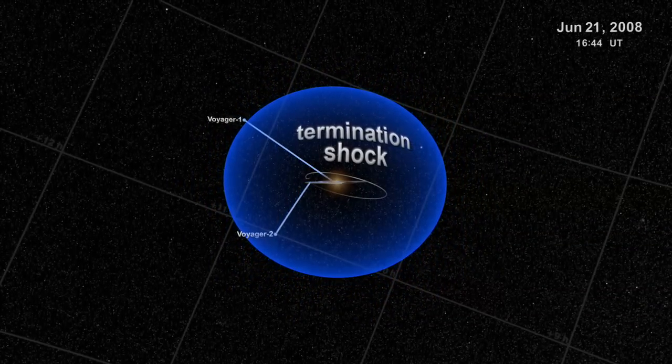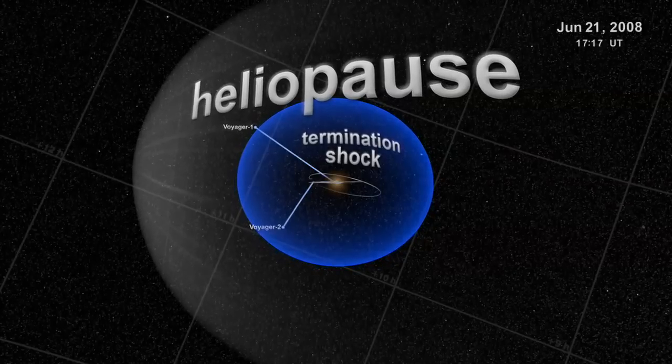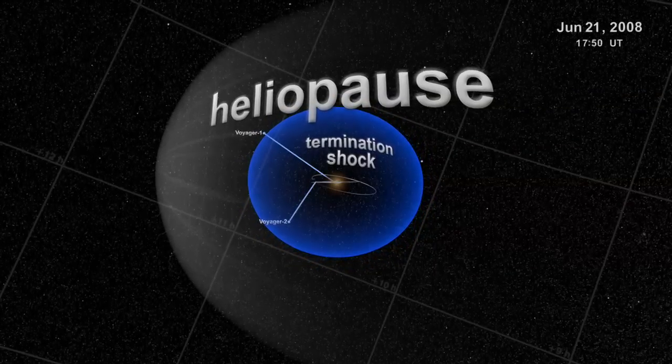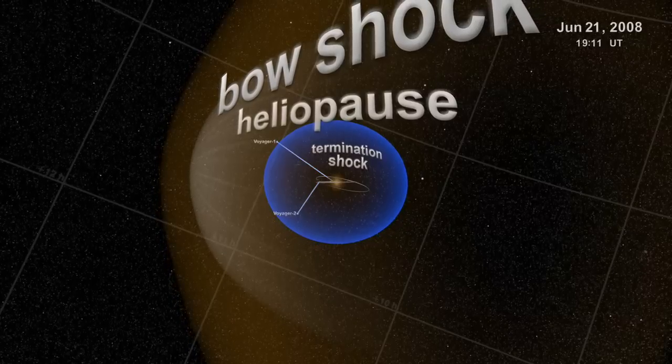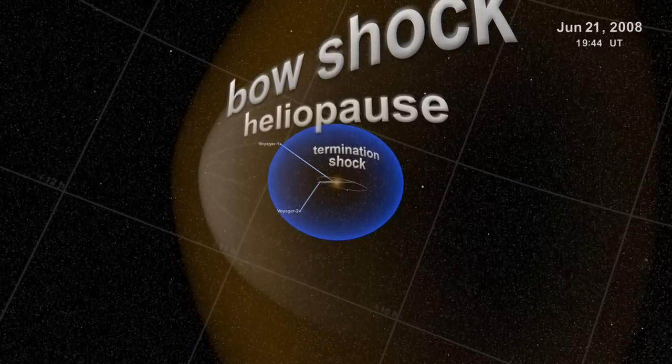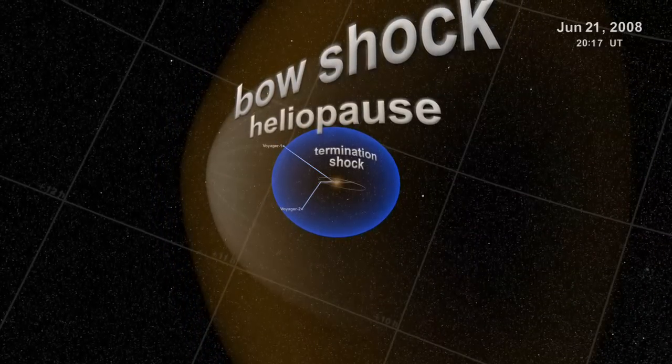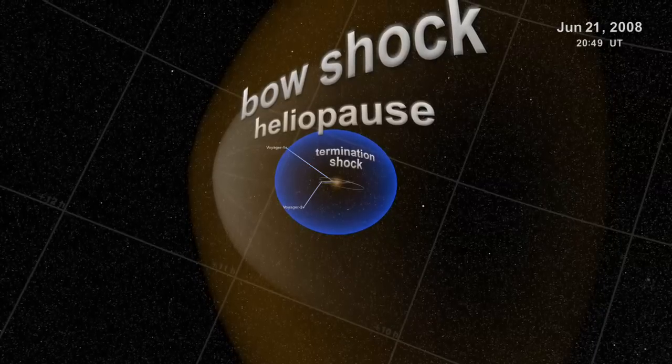In a couple of decades, one of the Voyager crafts should pass the heliopause, the zone where the sun's influence meets the interstellar medium. Years later, it should encounter the so-called bow shock. That's the wake in flowing interstellar particles as they move around the bubble of energy and particles emanating from our star.